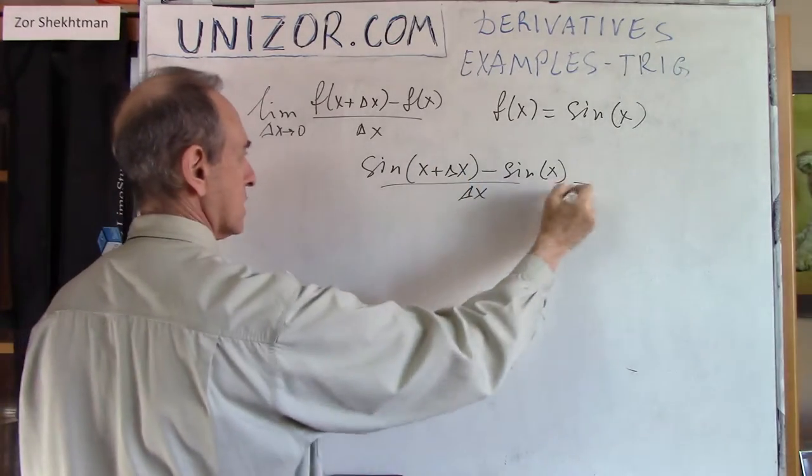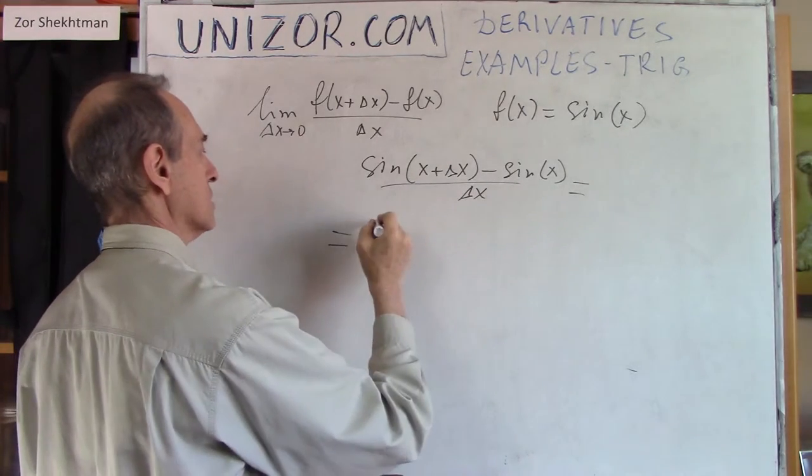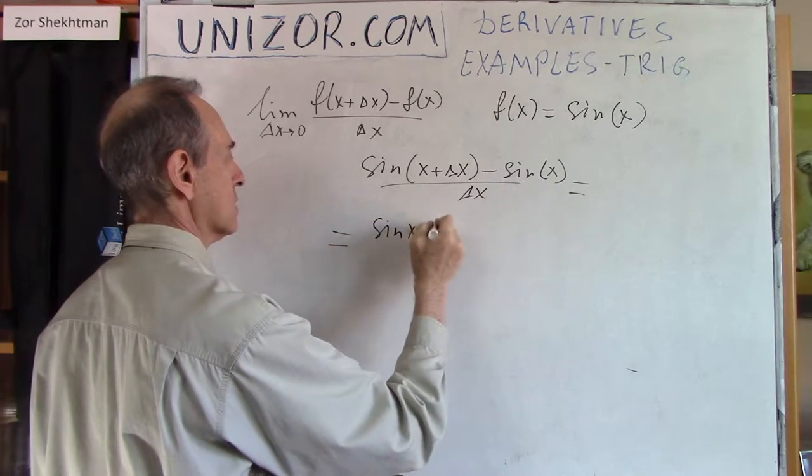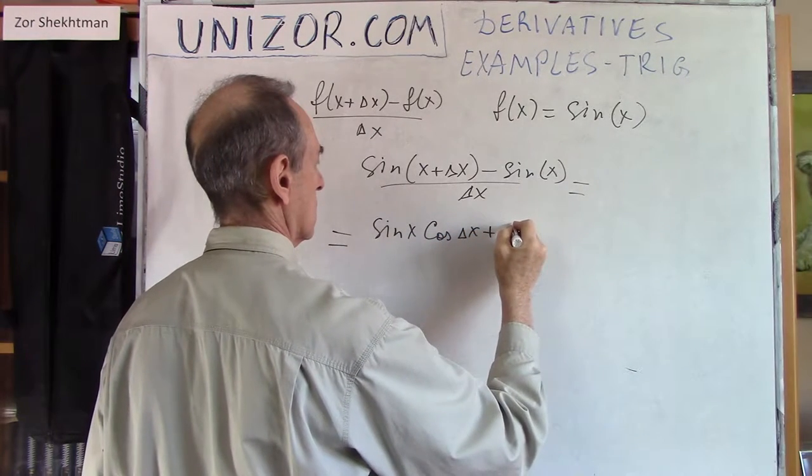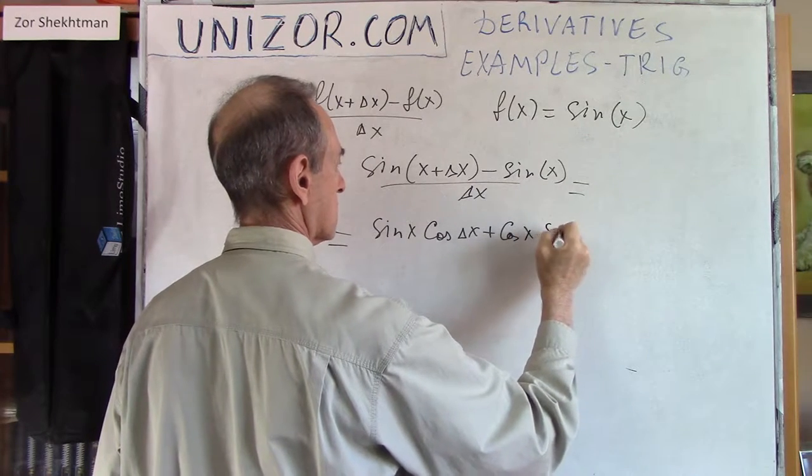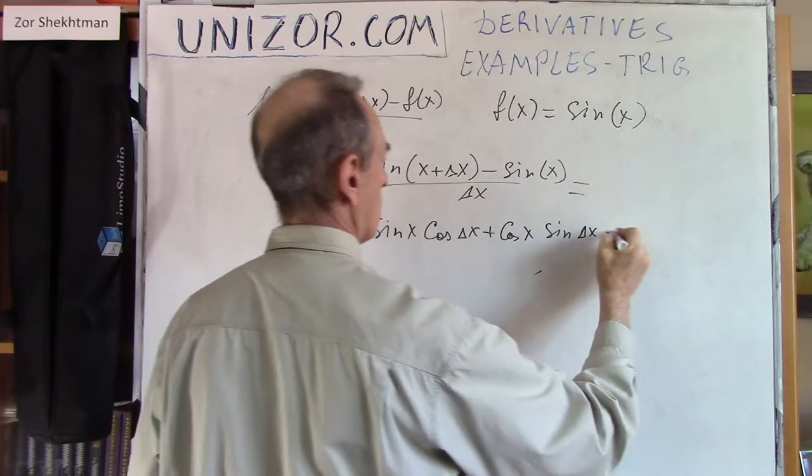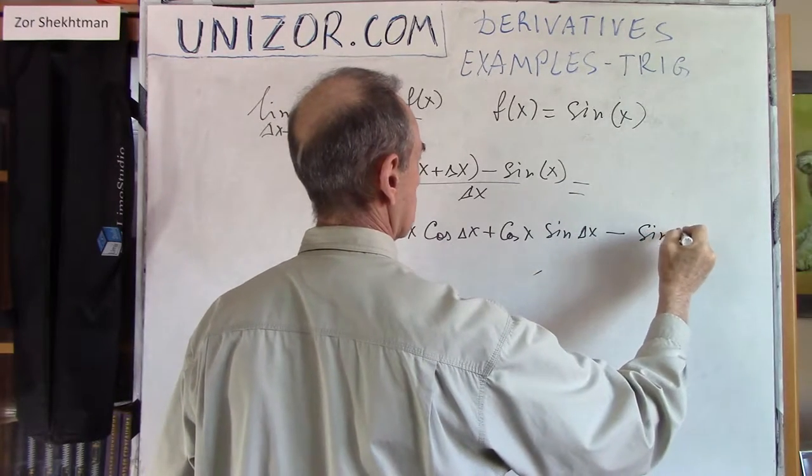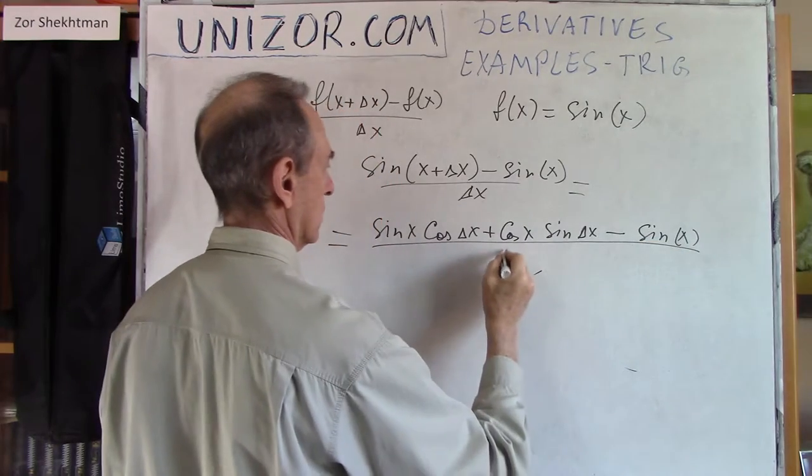Now that's equal to, we have sine of the sum of two angles. So it's sine x cosine delta x plus cosine x sine delta x minus sine of x divided by delta x.